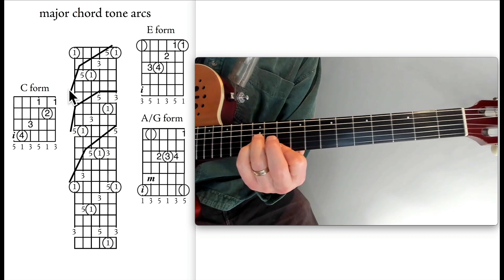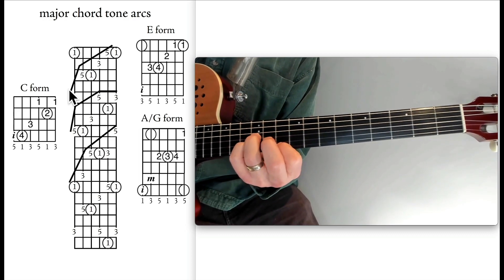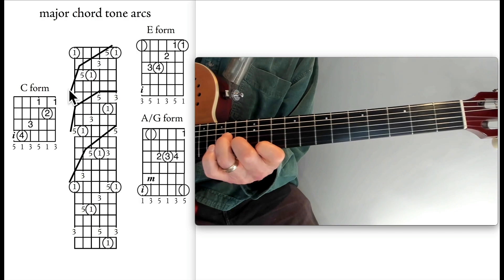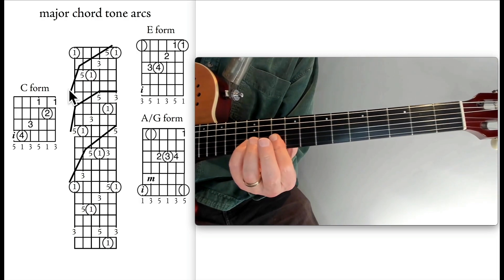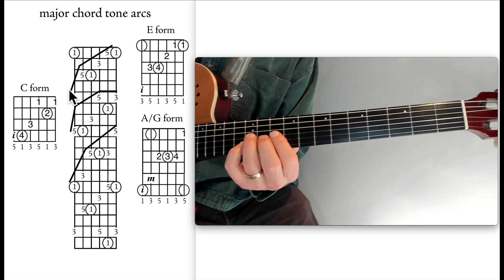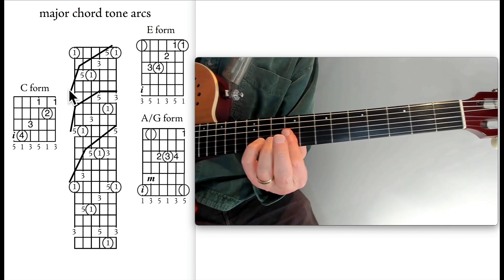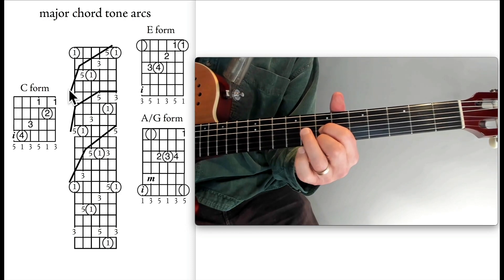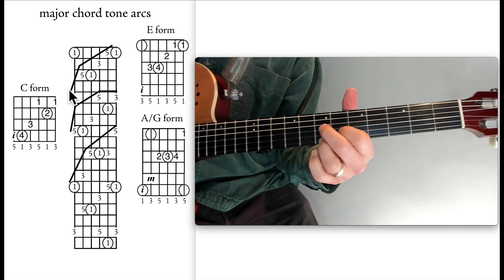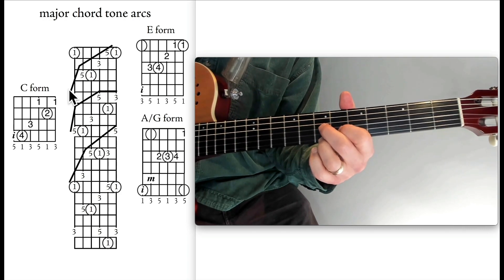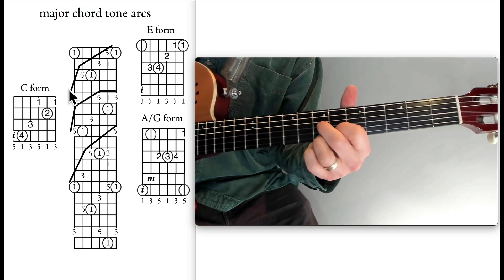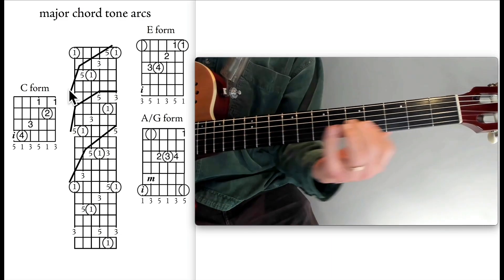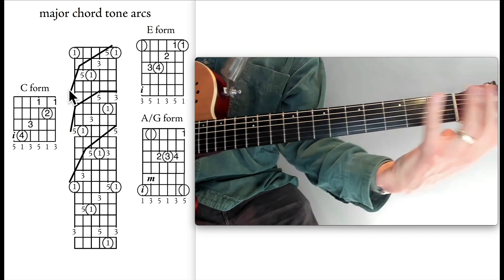G chord tones are here on those strings. That gives you G, then G7 (no third) — which is B diminished — then B-flat diminished, A diminished, and back to G. Follow the same rules again: change the one to flat 7, giving B diminished, then descend chromatically — B-flat diminished, A diminished — and then back to the nearest tones of G. B diminished, also known as G7 (no third), is a synonym or alternate name. Then B-flat diminished, A diminished, G, and you're back where you started.